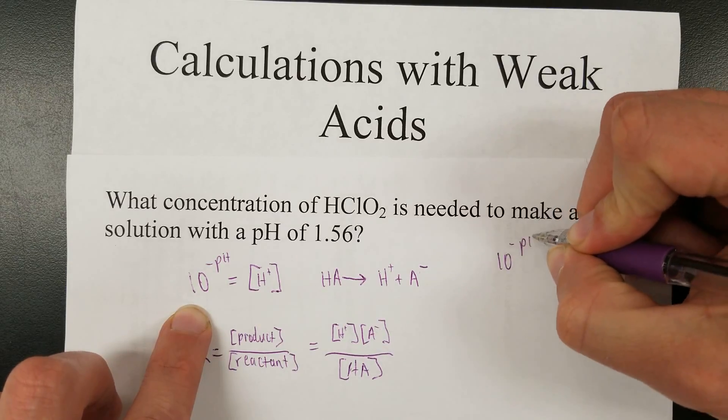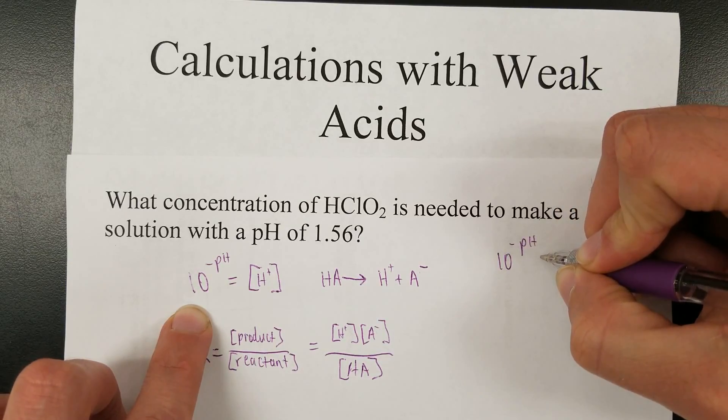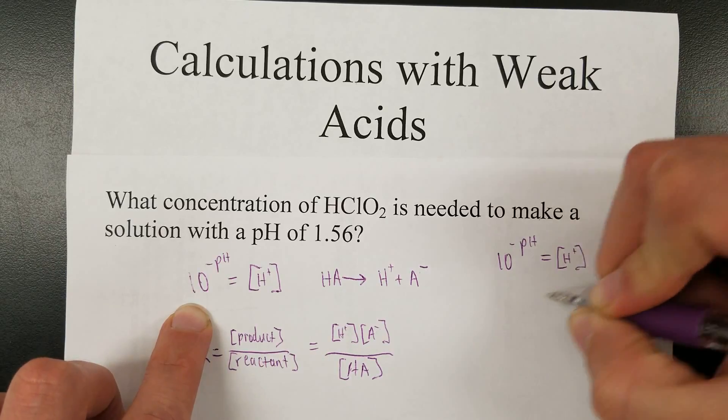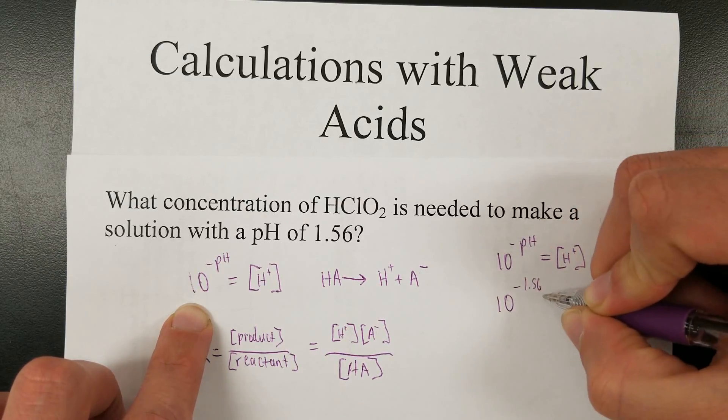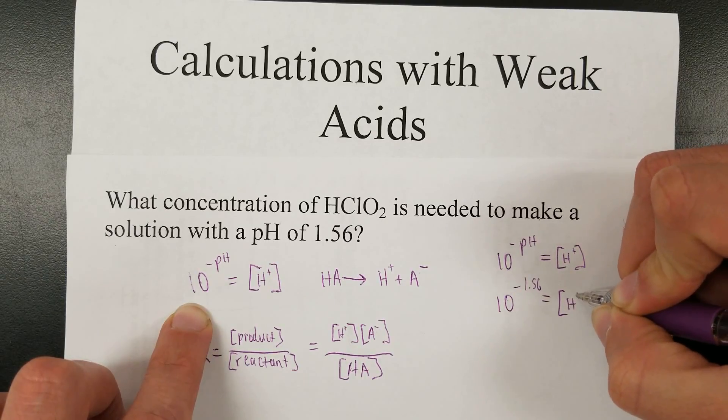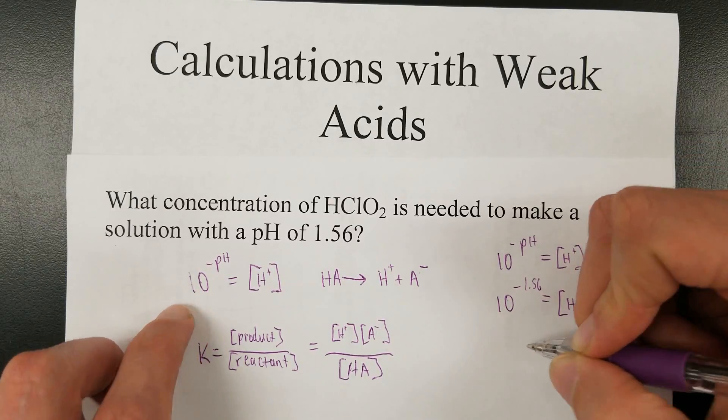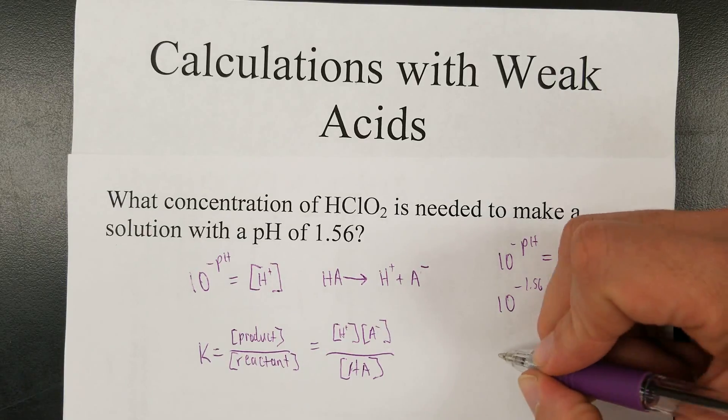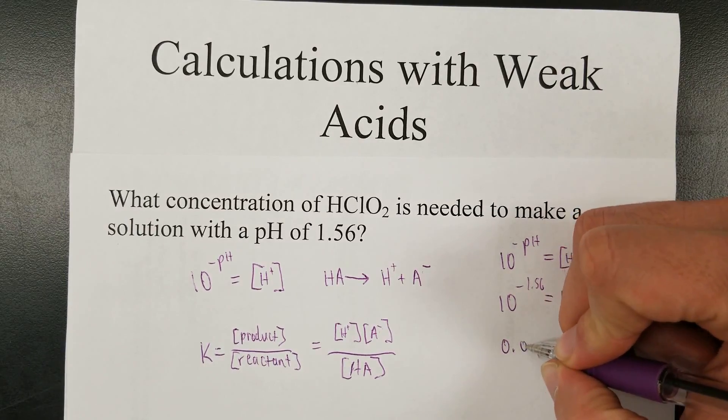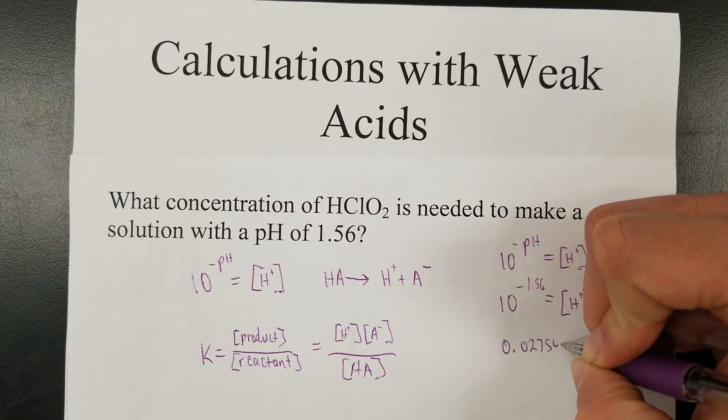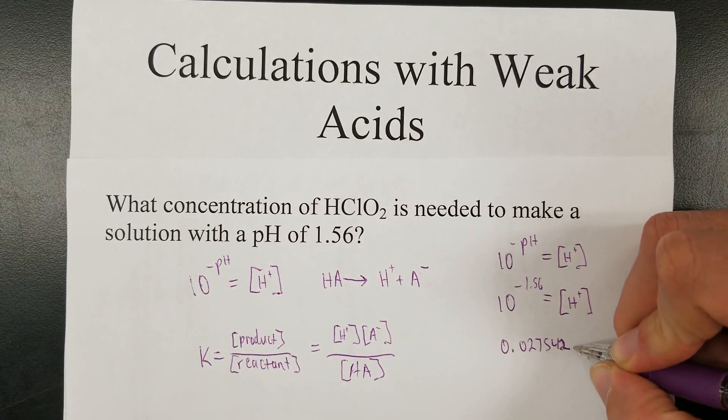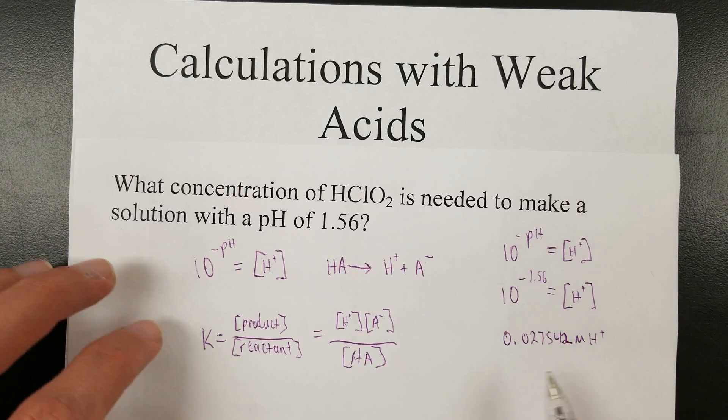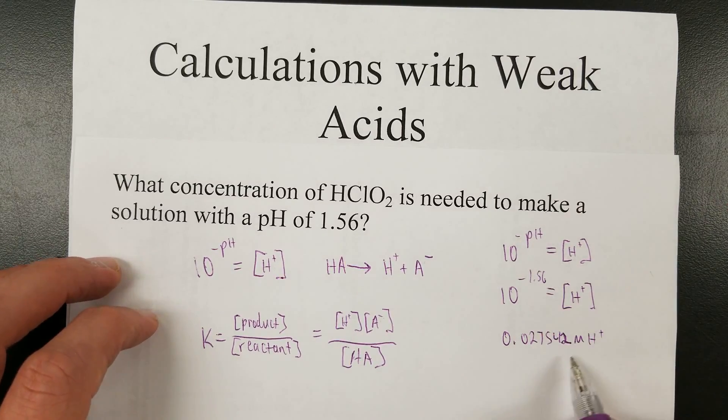So 10 to the negative pH is the hydrogen ion concentration. So 10 to the negative pH equals hydrogen ion concentration, which means 10 to the negative 1.56 equals hydrogen ion concentration for this particular scenario. And that particular number is approximately 0.027542 molar hydrogen ion.